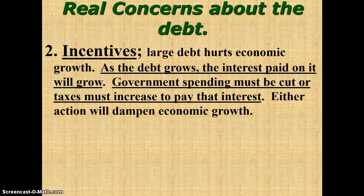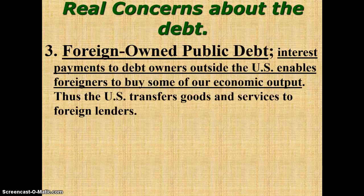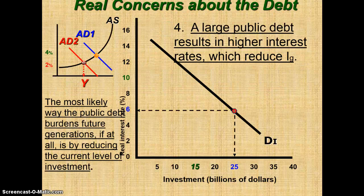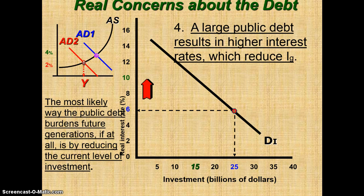Real concerns about the debt: incentives. Large debt hurts economic growth. As the debt grows, the interest paid on it will grow. Government spending must be cut or taxes must increase to pay that interest, and either action will dampen economic growth. Foreign-owned public debt: interest payments to debt owners outside the U.S. enables foreigners to buy some more economic output, so the U.S. transfers goods and services to foreign lenders. Large public debt results in higher interest rates, which will reduce gross investment. The most likely way the public debt burdens future generations, if at all, is by reducing the current level of investment.